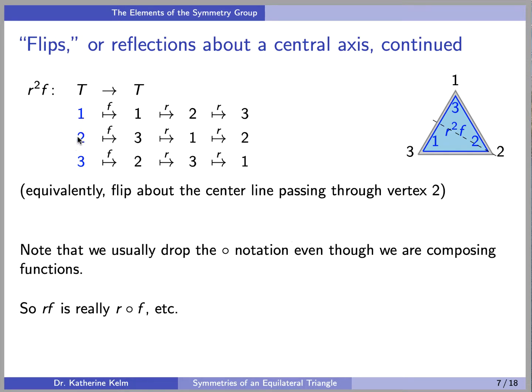And if you check out what happens here, that means 2 is sent to itself and 1 and 3 are swapped, which corresponds to a flip about the center axis passing through the element 2.